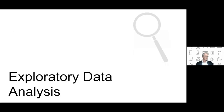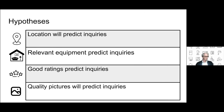In our data exploration, our initial hypotheses were the following: that location would be a predictor of inquiries, that relevant equipment would predict inquiries, that good ratings would be a positive predictor of inquiries, and that the quality of pictures would be a predictor of inquiries.